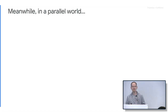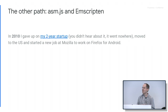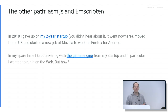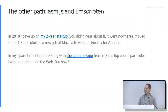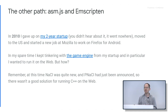Meanwhile, other events were happening in a parallel world. There's another path that involves things like asm.js and Emscripten, which is the path I was involved in. In 2010, I gave up on a startup you never heard of and moved to work on Firefox for Android at Mozilla. In my spare time I kept tinkering with the game engine from the startup — I wanted to run it on the web. The question was how. This was 2010; NaCl was quite new, PNaCl was just announced, and it wasn't clear what the adoption would be of these technologies or what would be a good way to run a large C++ codebase on the web.